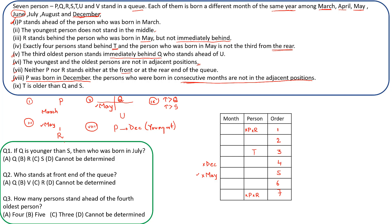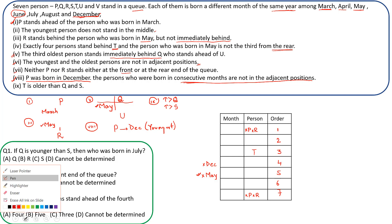So May can only be at position 3 or position 2, with Q immediately before it. If May is at position 3, Q is at position 2. If May is at position 2, Q is at position 1. Let's start with Case 1: Q at position 2 and May at position 3, with T occupying position 3 for the May month.